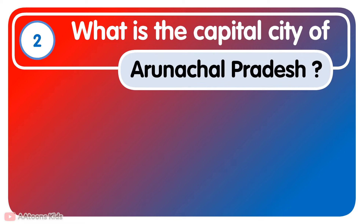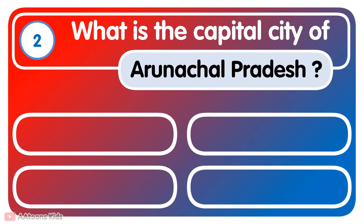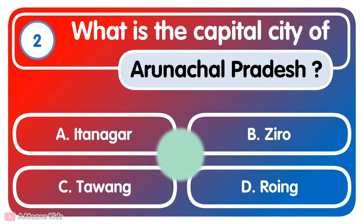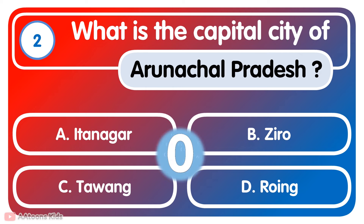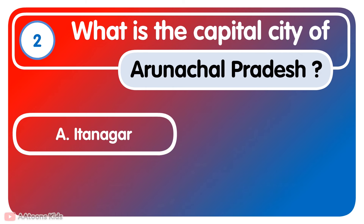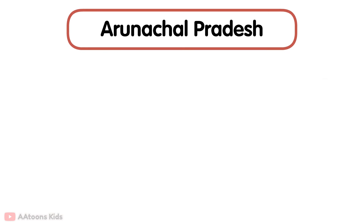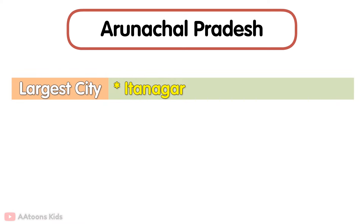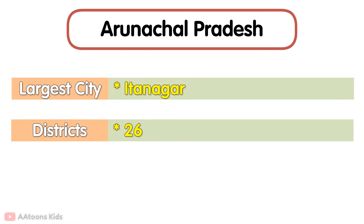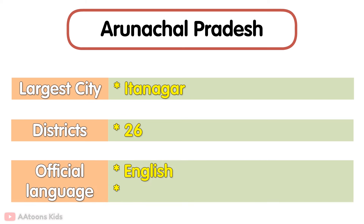What is the Capital City of Arunachal Pradesh? Itanagar. Itanagar is the Capital City of Arunachal Pradesh. The largest city in Arunachal Pradesh is Itanagar. It has 26 Districts. The official language is English. Arunachal Pradesh is known as India's Land of the Rising Sun.